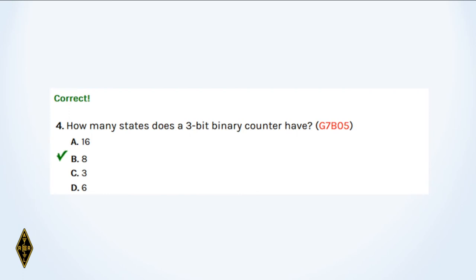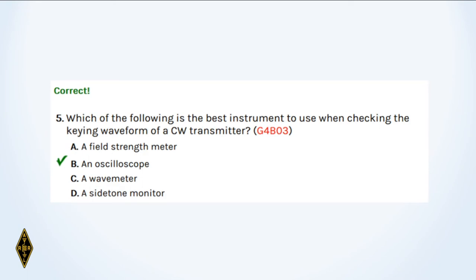And four: How many states does a three-bit binary counter have? Two to the third power, or eight. And five: Which of the following is the best instrument to use when checking the keying waveform of a CW transmitter? You view a waveform on an oscilloscope.